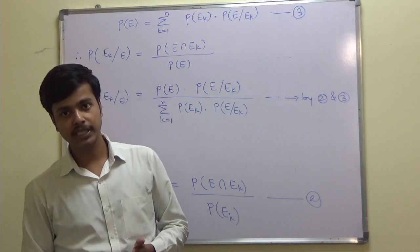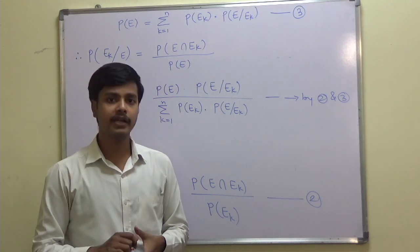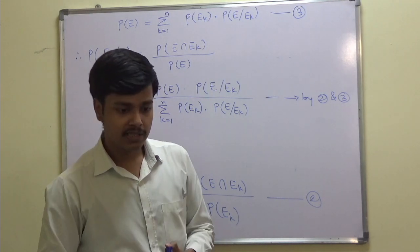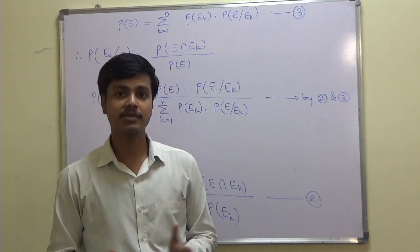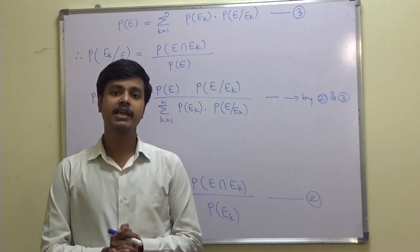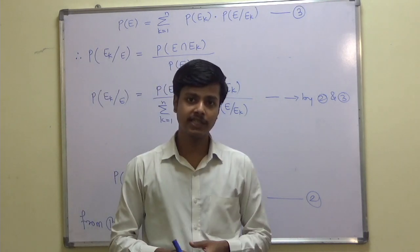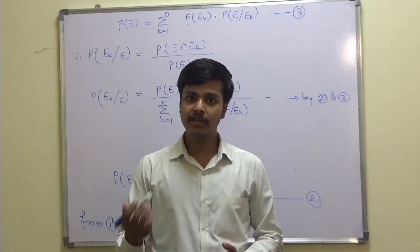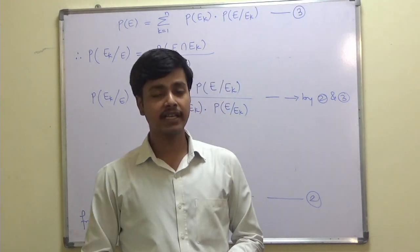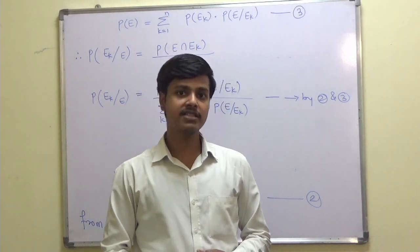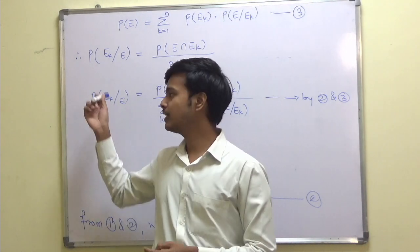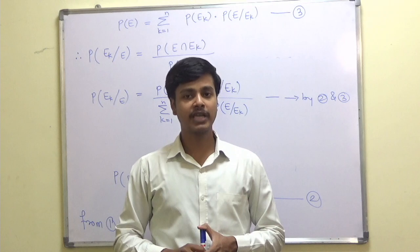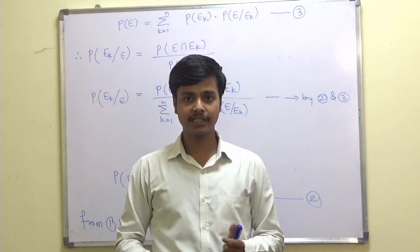So you have seen the very simple proof of Bayes' theorem. The significance of Bayes' theorem is that it can convert the conditional probability of EK given E into another conditional probability, P of E given EK. I hope this video lecture is making sense. In the upcoming lectures we'll take some examples on Bayes' theorem. Thank you for watching this learning video.